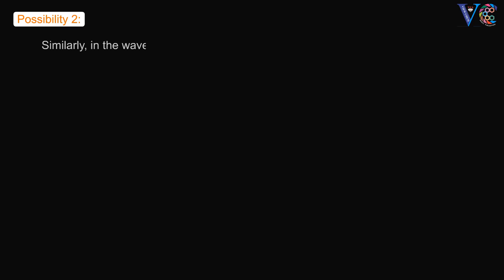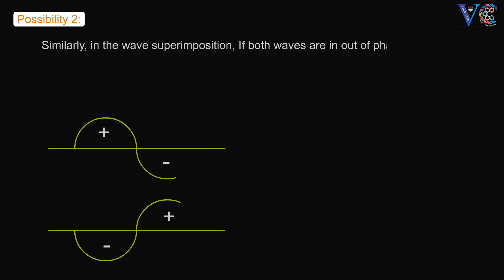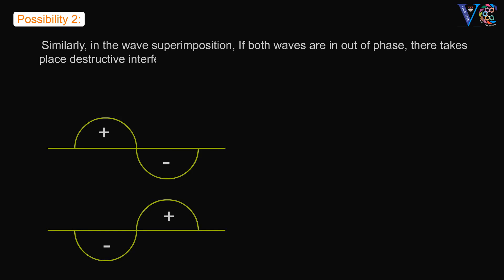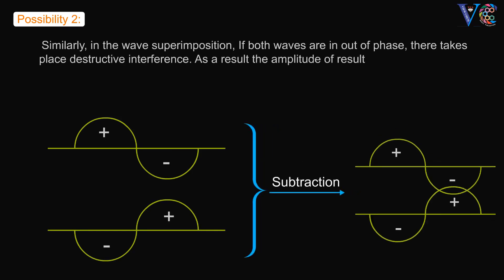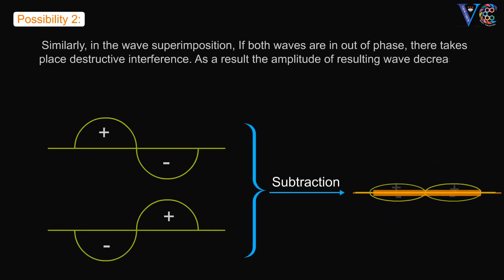Possibility 2: Similarly, in wave superimposition, if both waves are out of phase, destructive interference takes place. As a result, the amplitude of the resulting wave decreases. Thus, an antibonding molecular orbital is formed.